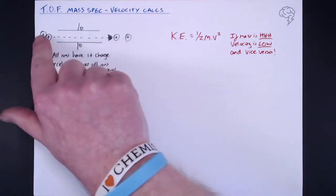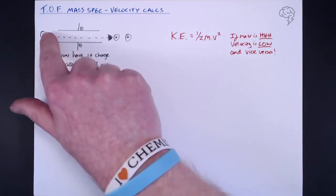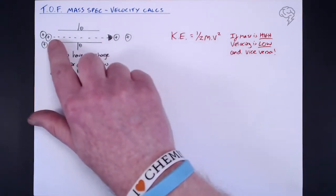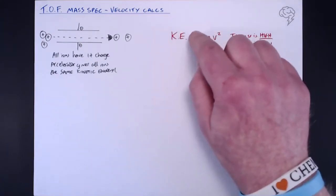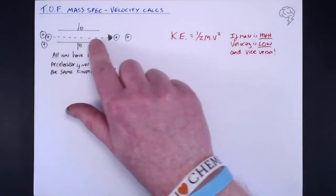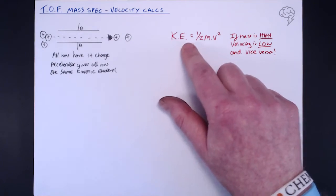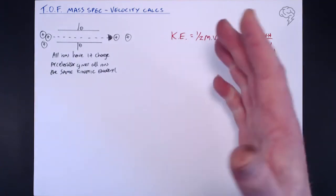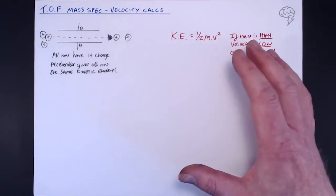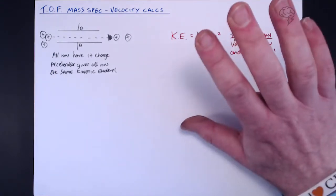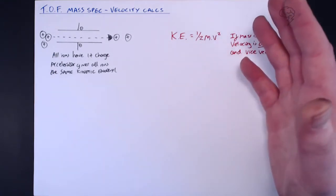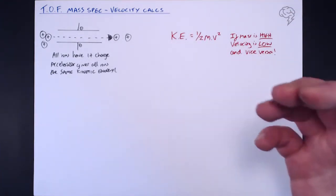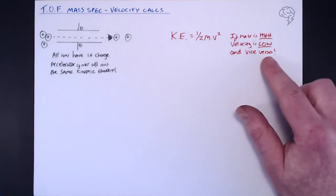If we've got really heavy isotopes, they're given that kinetic energy but they trundle along at a very slow pace. The lighter ones are blasted forward much quicker and they're going to get to the detector quicker — which is why it's called the time-of-flight mass spectrometer, because it depends on the mass how long it takes to get to the detector. It's just like if you had a bowling ball and a football and you pushed them both forwards with the same force — the football travels faster because it's lighter, whereas the bowling ball doesn't travel as fast because it's heavier.